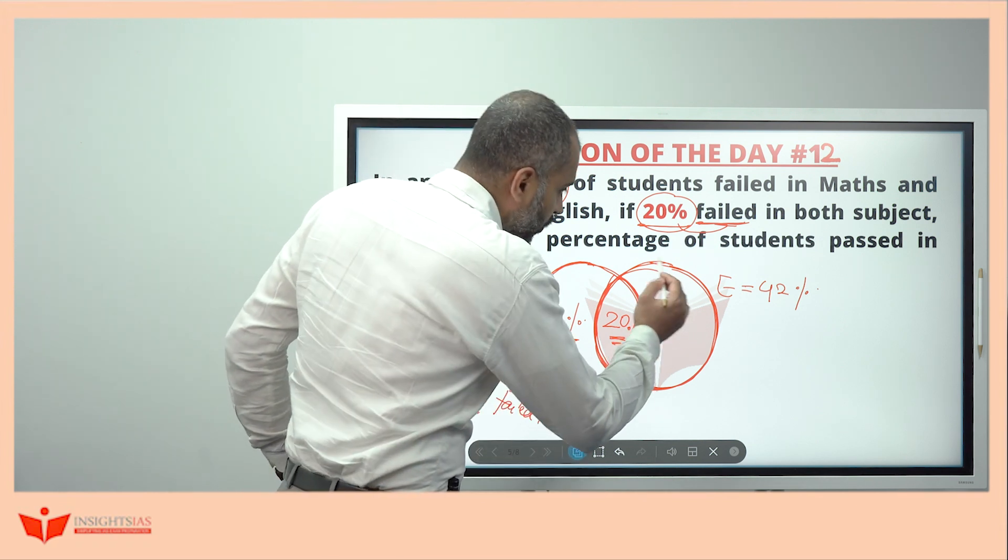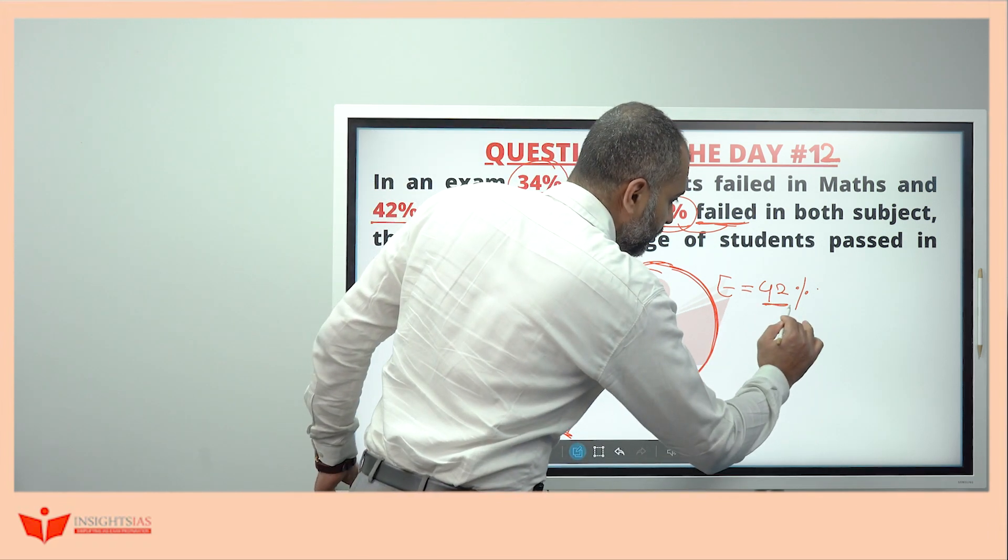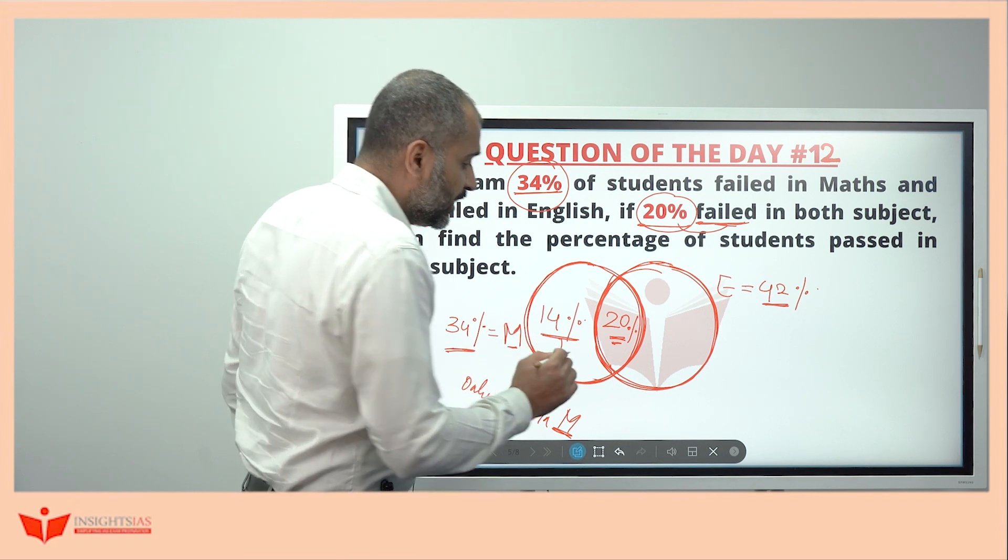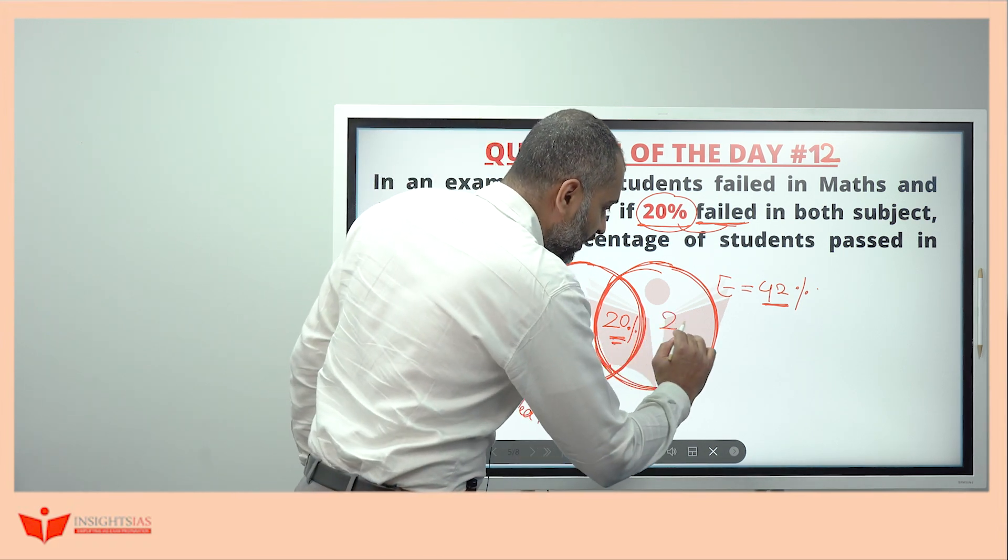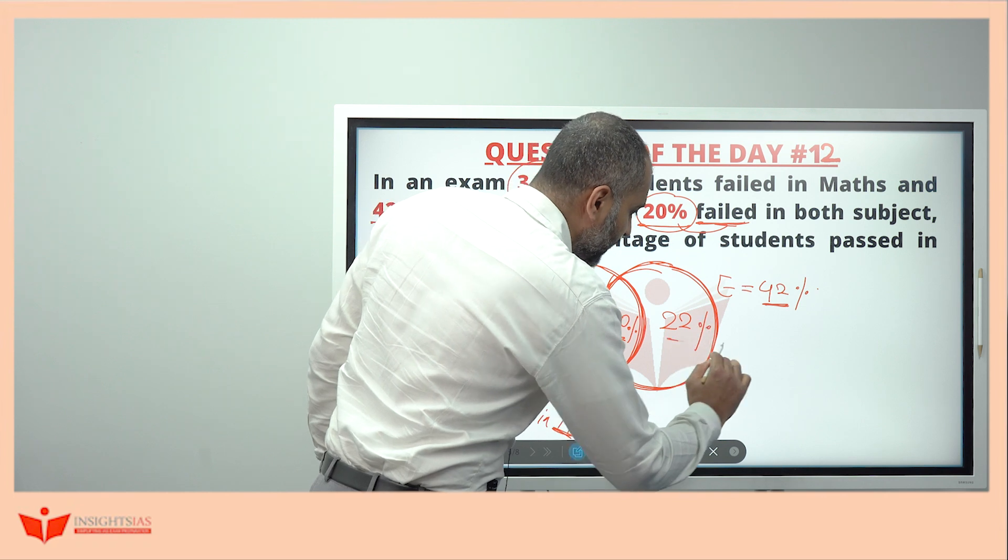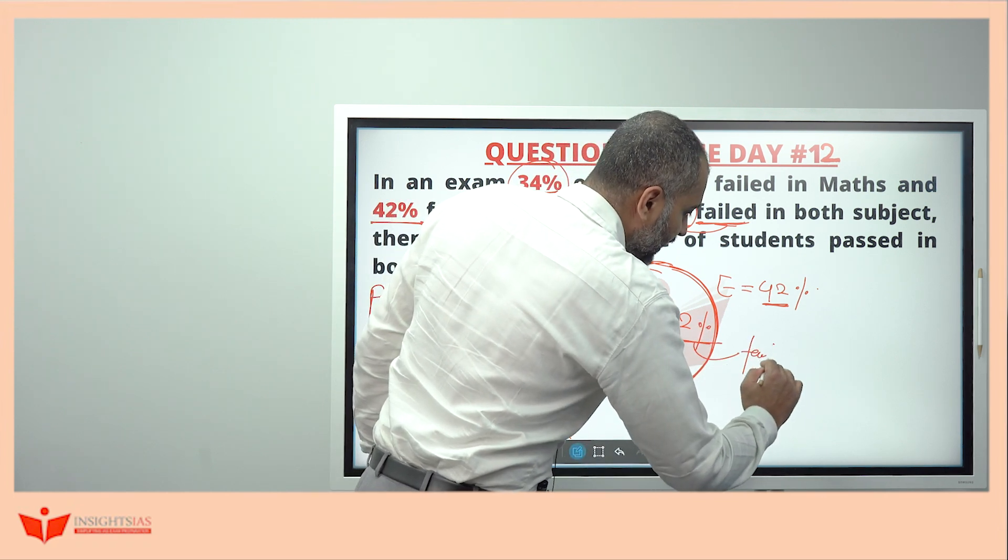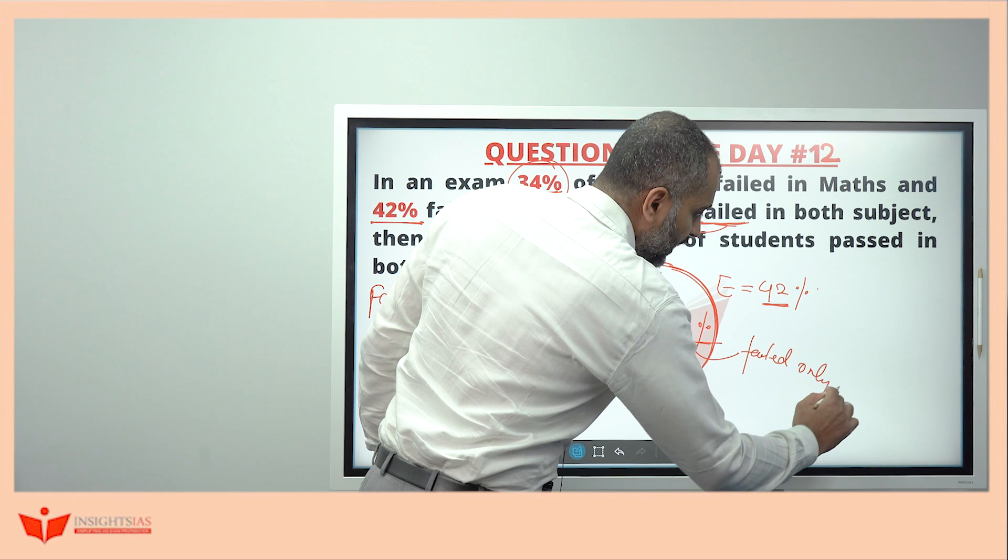Similarly now, this whole circle should represent 42% which is failed in English. In which already 20% is there. So what to put here? 22%. 22% is failed only in English.